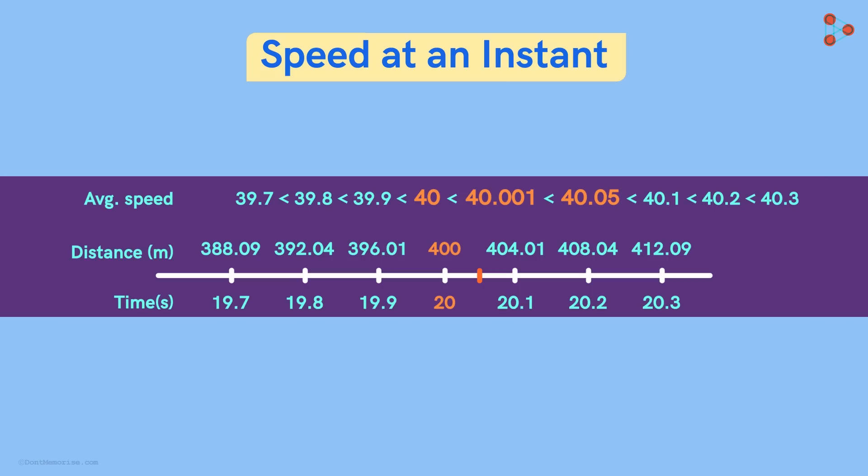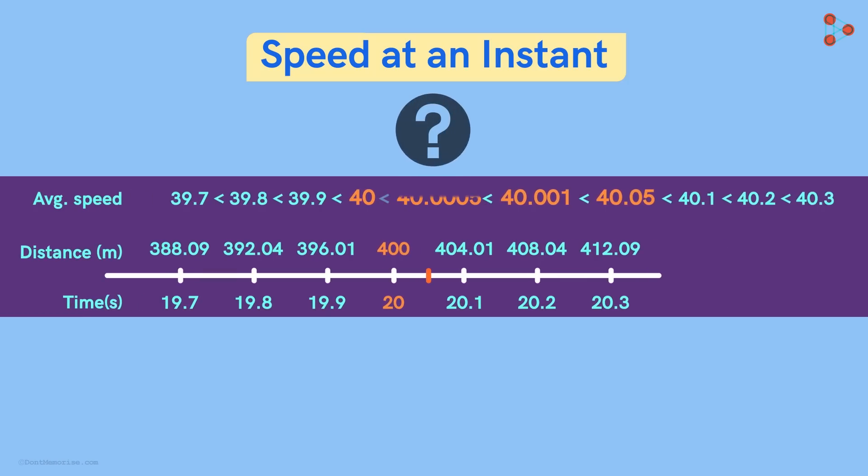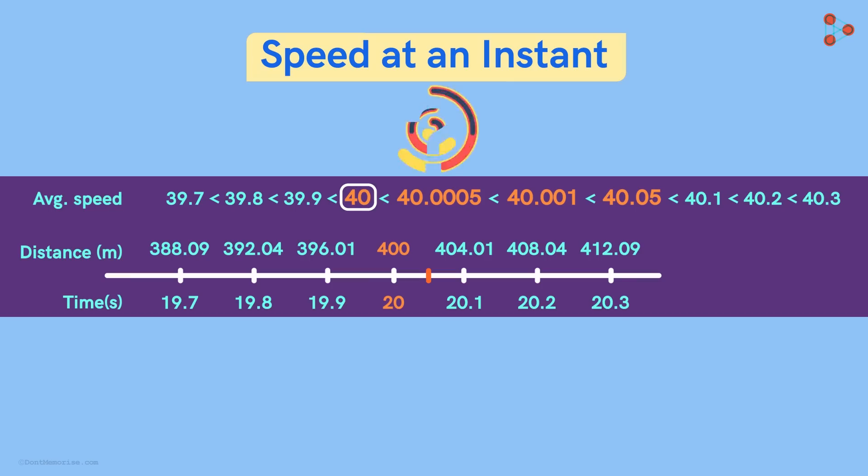But then, how do we know that 40.0005 is not our answer? How can we be so confident that it's 40? Any solution for this?